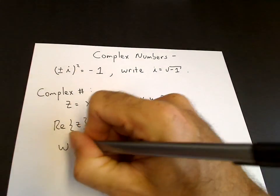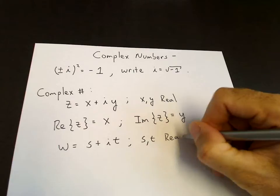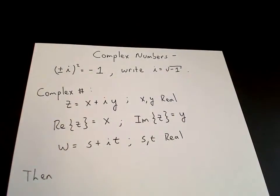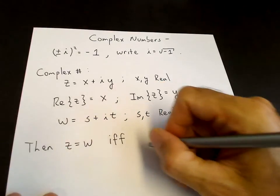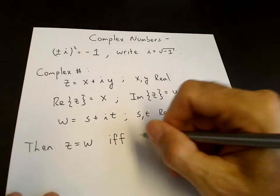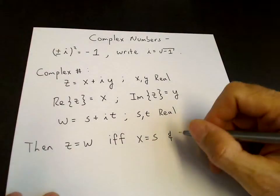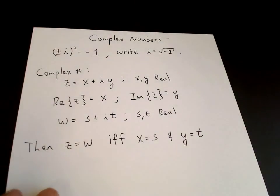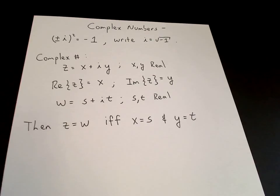If we introduce another complex number w equals s plus it, with s and t real, then z is equal to w if and only if the real part of z equals the real part of w — that is, x equals s — and the imaginary part of z equals the imaginary part of w — that is, y equals t. So one complex equation, z equals w, is equivalent to two real equations: the real part of the left-hand side equals the real part of the right-hand side, and the imaginary part of the left-hand side equals the imaginary part of the right-hand side.